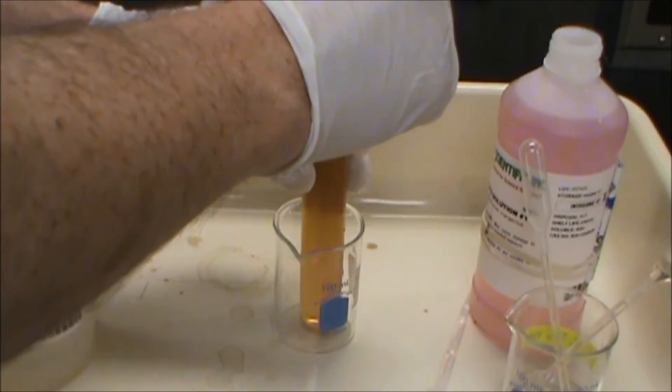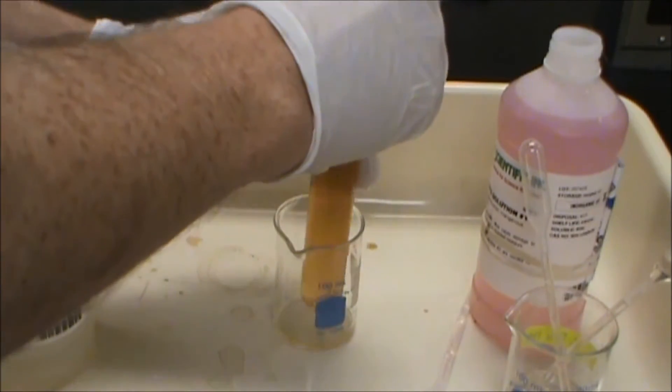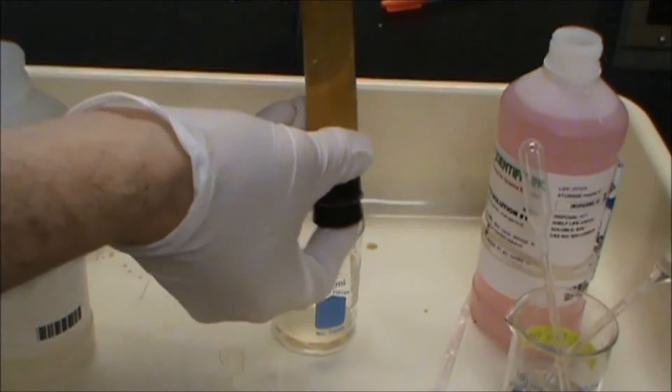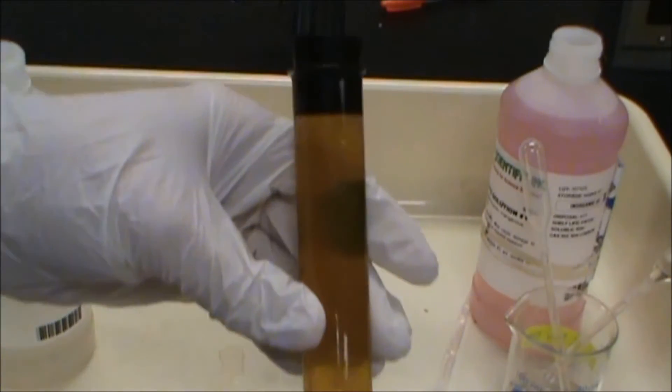So what we want to do now is we want to cap this. It's going to overflow, so we're going to keep this in a tray and in a beaker, and we want that to be on there where there's really no air bubbles at all. So now you can see this brown precipitate forming.